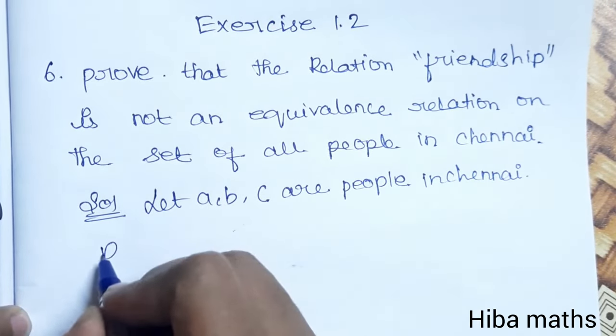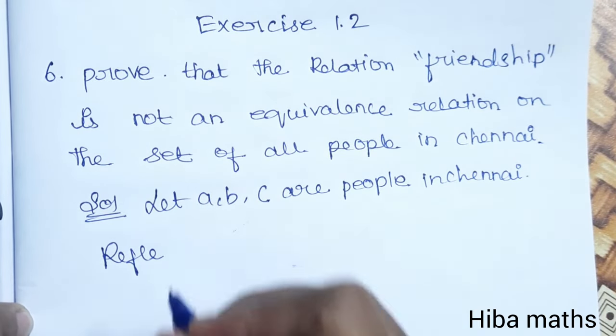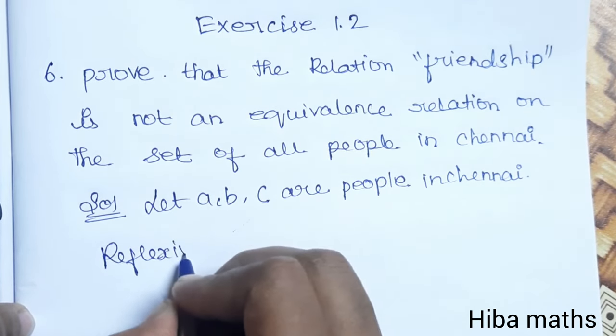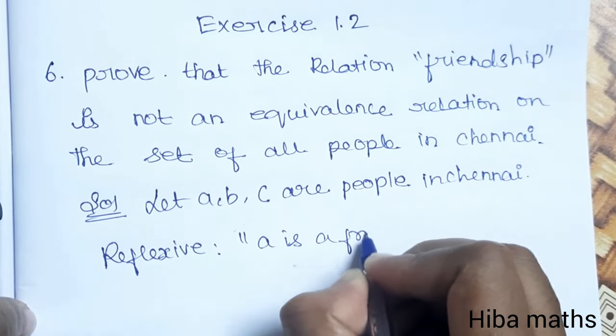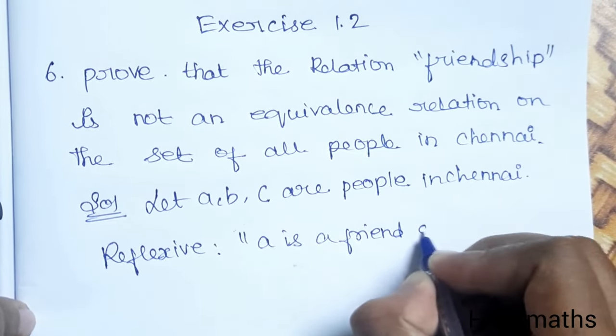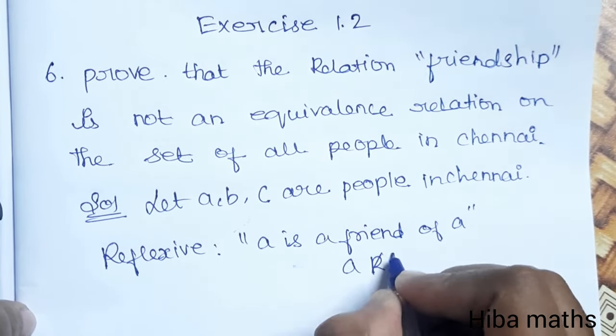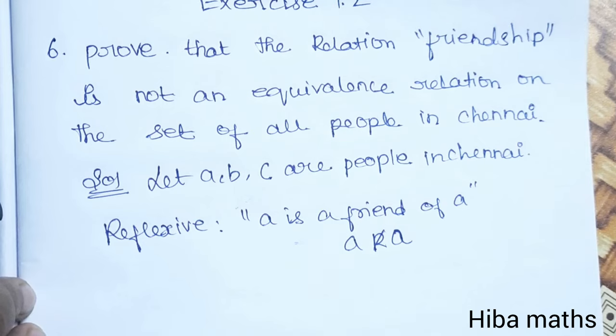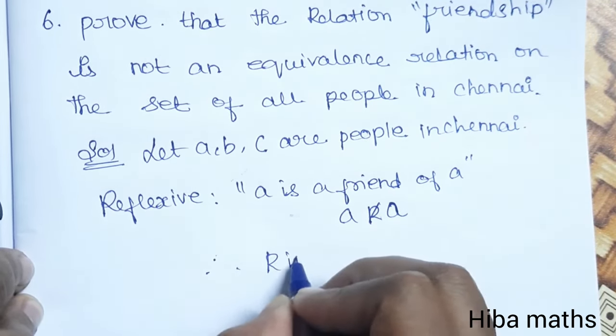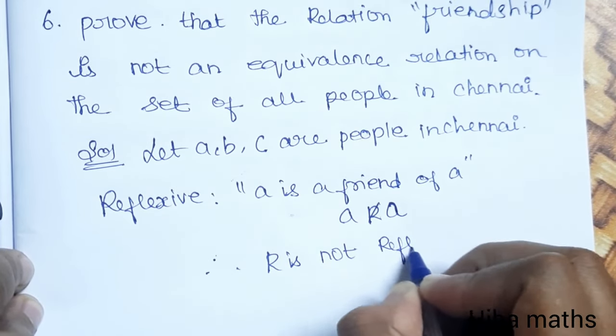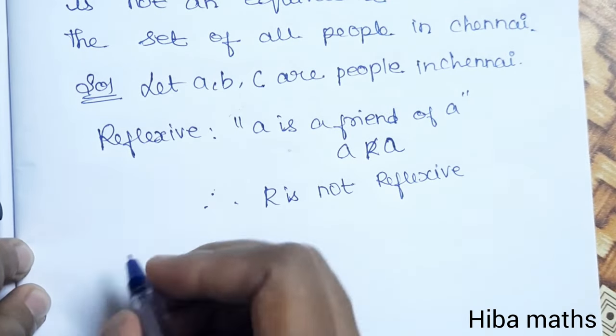First, reflexive. To prove this is not an equivalence, we need to check if it's reflexive. For reflexive, the condition is: a is a friend of a. Is a a friend of a? No. So it is not reflexive. Therefore, R is not reflexive. So it is not reflexive, so this is not an equivalence relation.